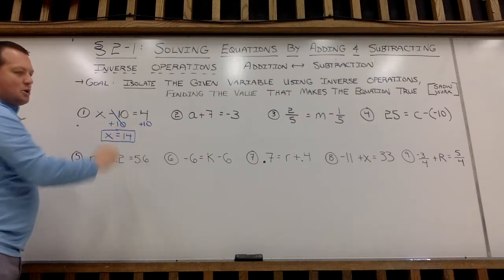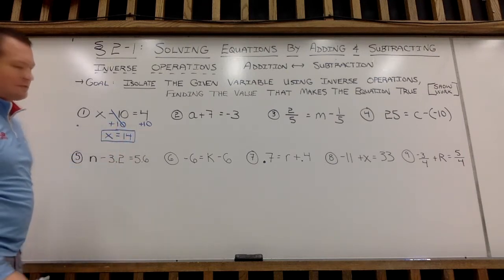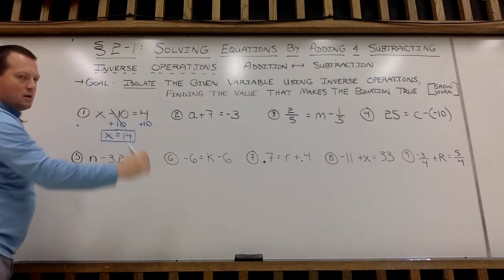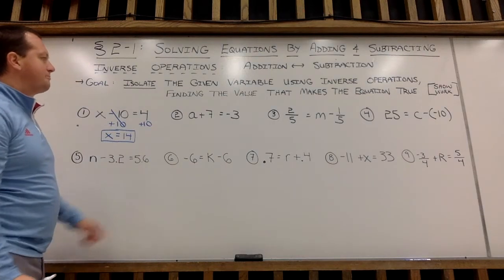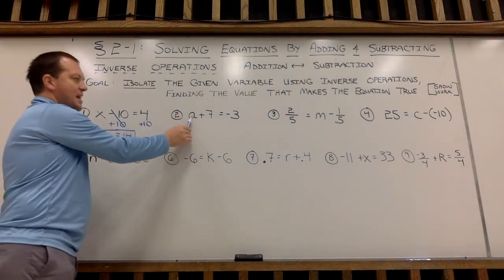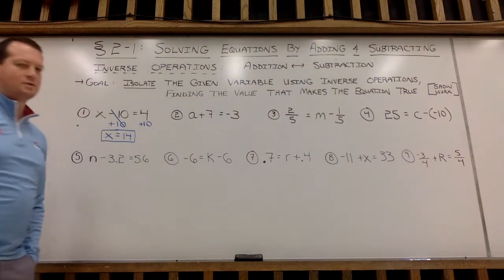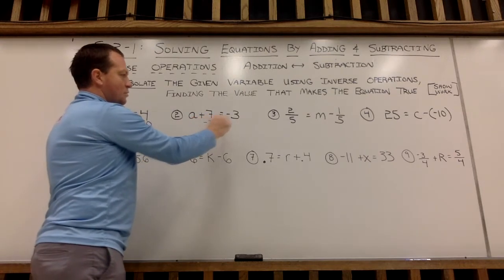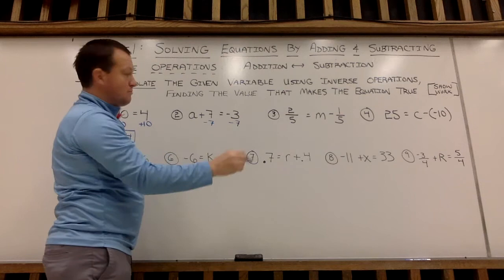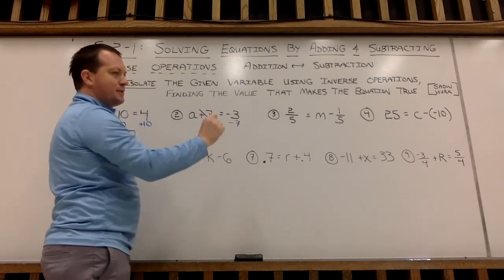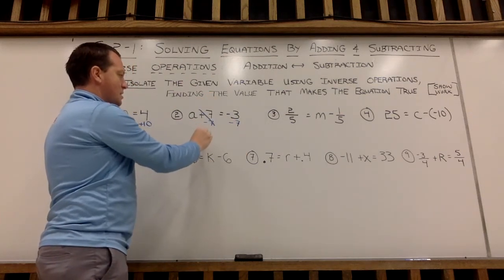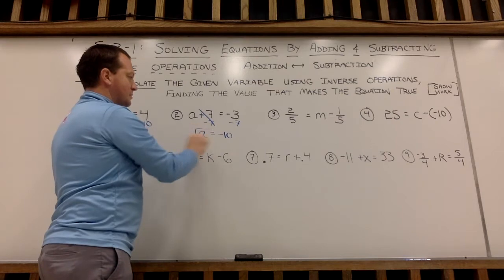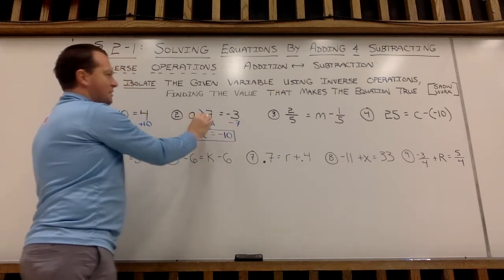Now the nice thing about these equations is you can always check your answer. If I plug in 14 for x, is 14 minus 10 equal to 4? Yes, it is. Example 2: we have a plus 7 equals negative 3. So again, I'm going to isolate my a — undoing a plus 7 with minus 7 from both sides. Plus 7 minus 7 makes 0, they cancel out, making my a isolated. Negative 3 minus 7 is negative 10.